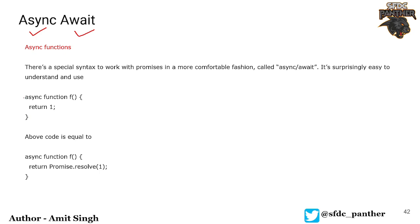Now let's quickly talk about how your async function is going to look. This is the simple function — we write the async keyword, then the name of our function, and it is returning one. What we need to do is just add the keyword async, and it is going to make our function run in async mode.